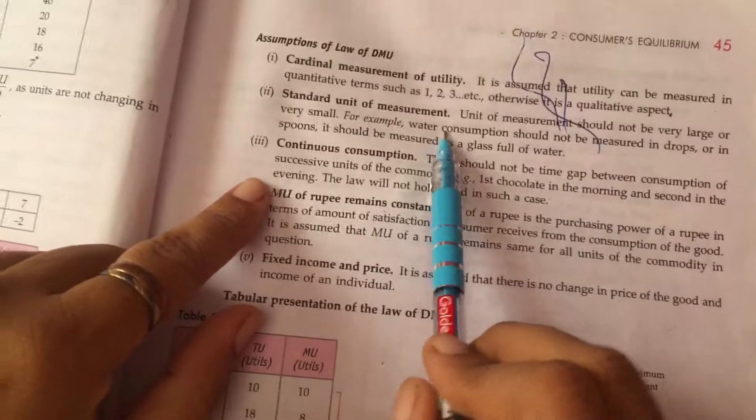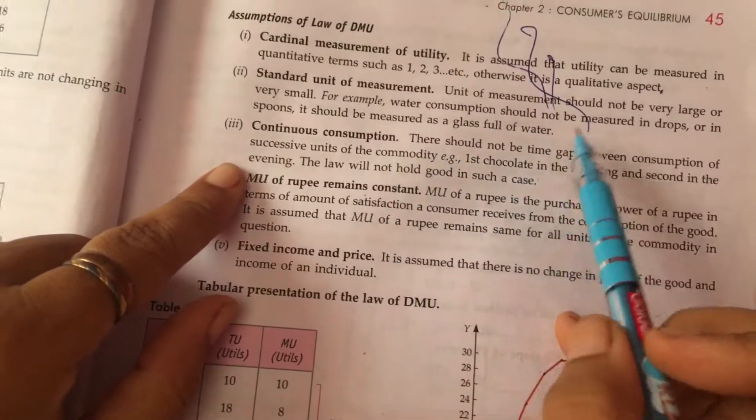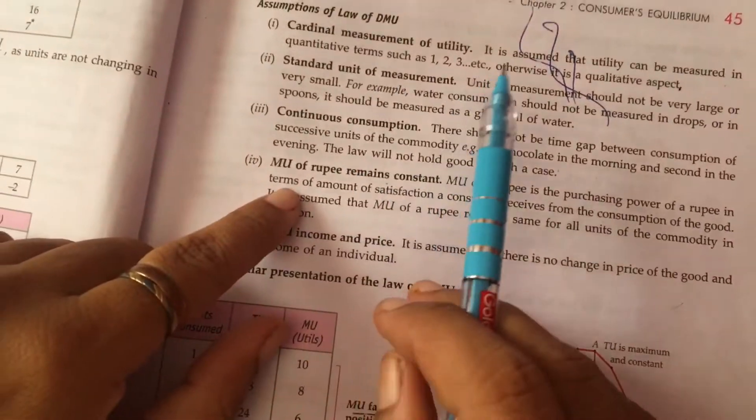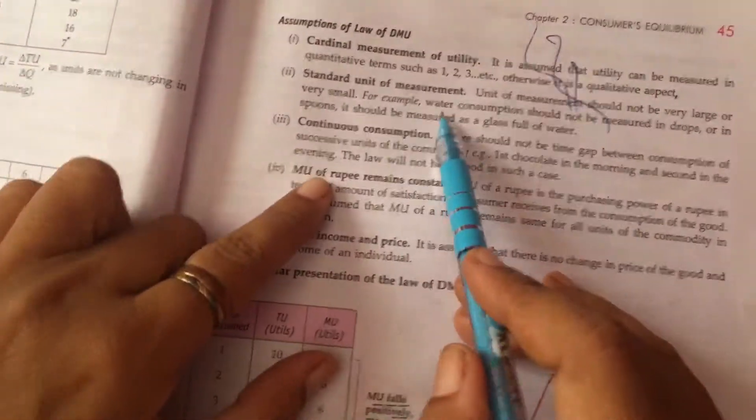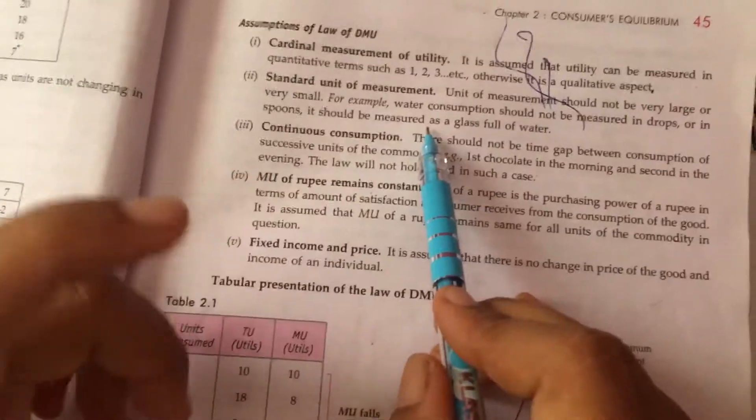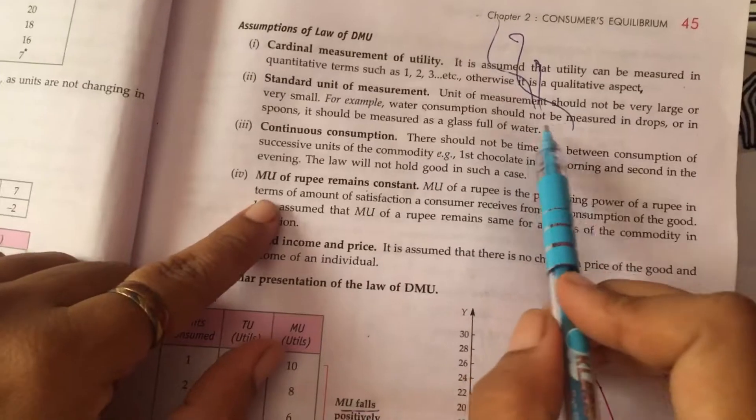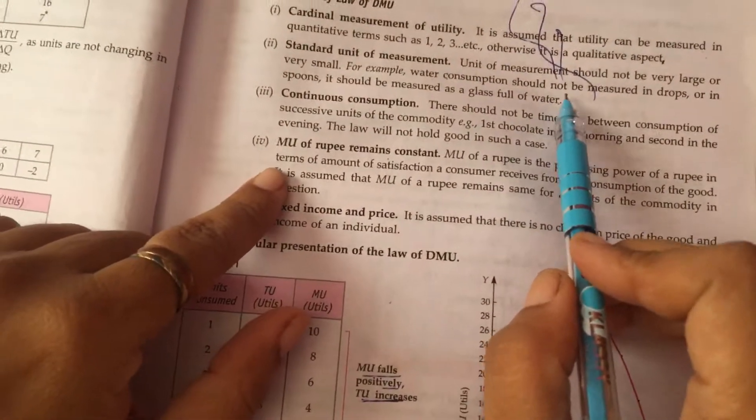Then it is a standard unit of measurement. The unit of measurement could not be very large or very small. The standard of unit should not be bigger or smaller. Someone has given an example: We can consume how many glasses we can consume, but we cannot count the drop of water.